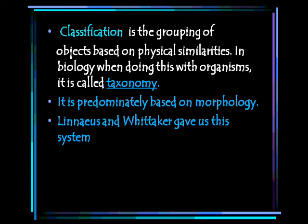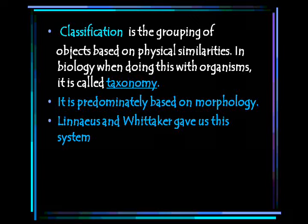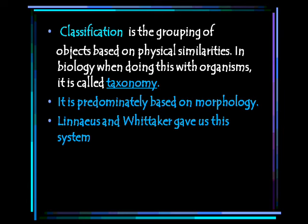Taxonomy is predominantly based on morphology, which means the characteristics that an organism has — what it looks like — not necessarily what its internal structures are or its behaviors, but basically just how it looks. The individuals that came up with this system are Carolus Linnaeus and John Whitaker. They created this organizational system that is still somewhat used today.